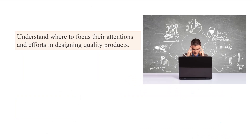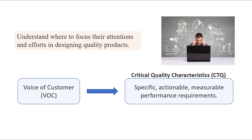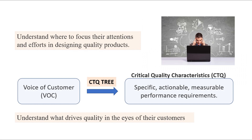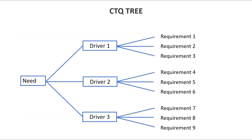CTQs are useful in helping product designers and manufacturing teams know where to focus their attentions and efforts in designing quality products. The methodology that is being used to translate the voice of customer to CTQ is called CTQ tree. The CTQ tree also helps designers understand what drives quality in the eyes of their customers. As you see here, a CTQ tree takes the form of a simple diagram and consists of three components: need, quality drivers, and performance requirements.